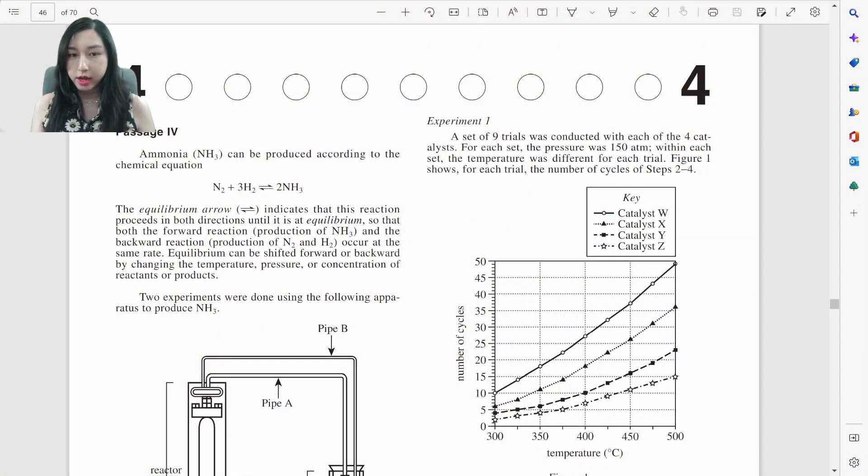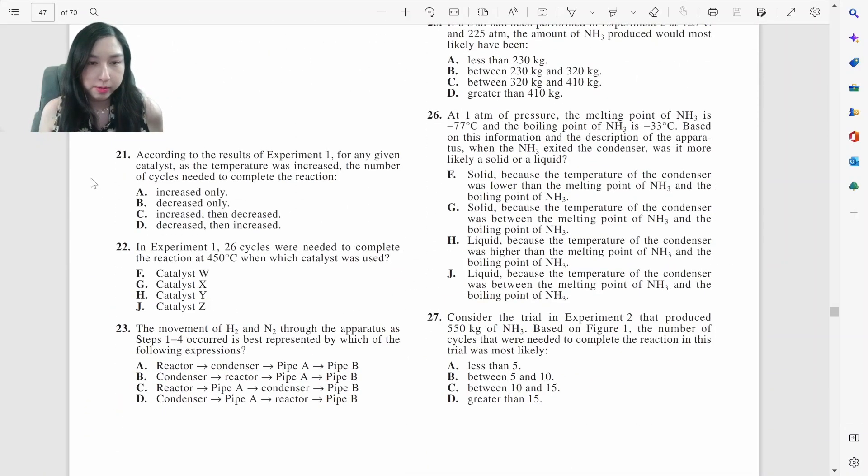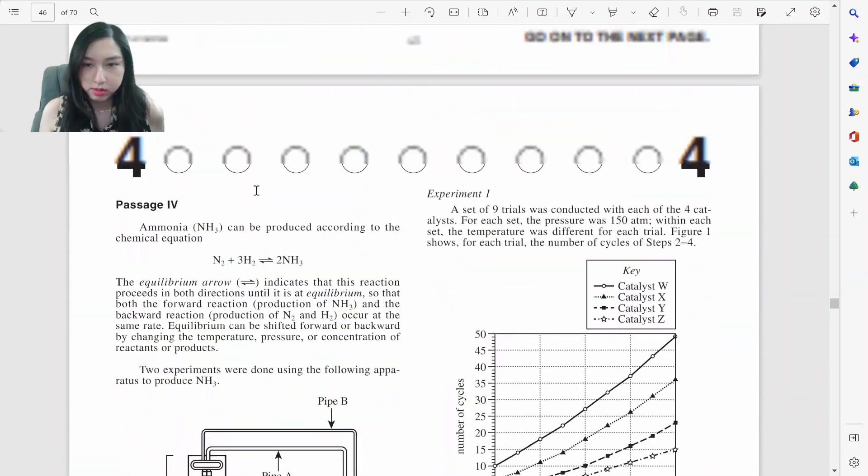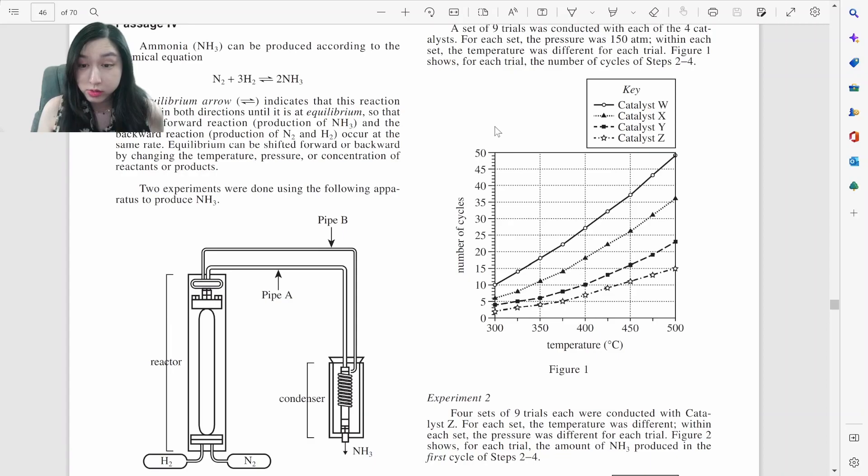Alright, let's take a look at the second half of the science portion. So this is production of ammonia. Let's just go straight to the problem. Experiment one, as the temperature increased, the cycles will. Experiment one, temperature increased, cycles will increase.